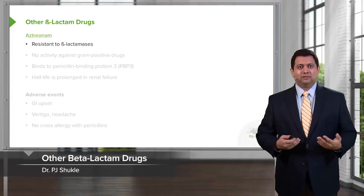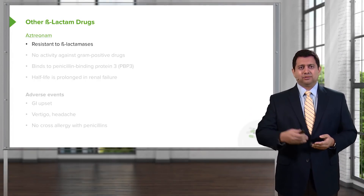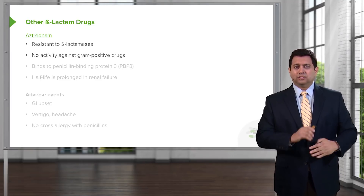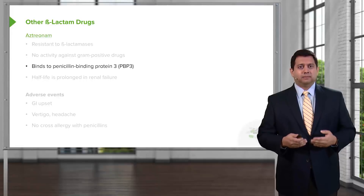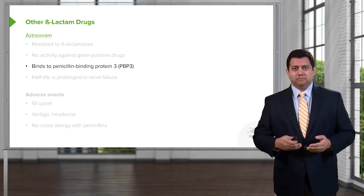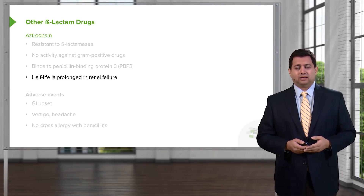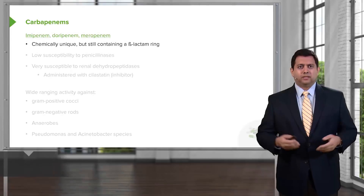Other beta-lactam drugs include aztreonam. It's not commonly used in clinical practice, but it's a drug you need to know. It is resistant to beta-lactamases, which is significant. There is no activity against gram-positive organisms. It binds to penicillin-binding protein type 3, or PBP3. The half-life is prolonged in renal failure, so you can adjust the dose accordingly. Adverse events include GI upset, vertigo, and headache. Importantly, there is no cross-allergy with the penicillins.